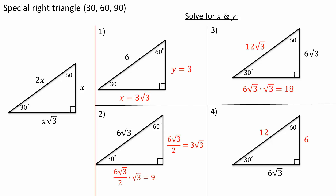So here, this is 90 degrees and that corresponds to 6, and we know 30 degrees is half of it. So y is equal to 3. Likewise, we know that 60 degrees would correspond to x times the square root of 3. So x is equal to 3 times the square root of 3. So this right here is the first problem.